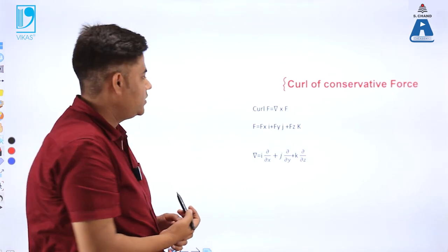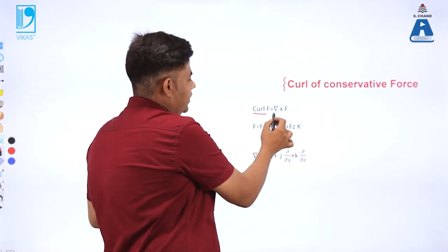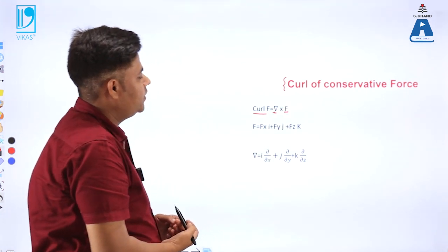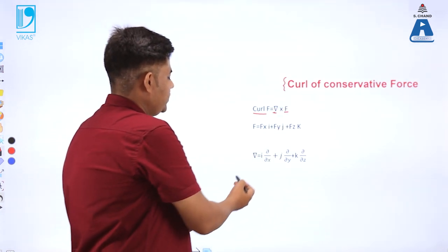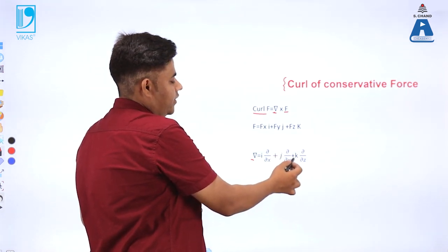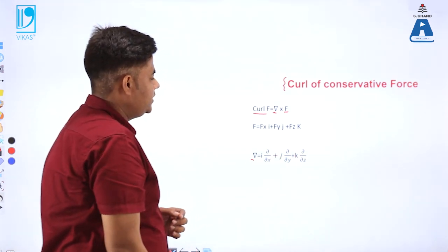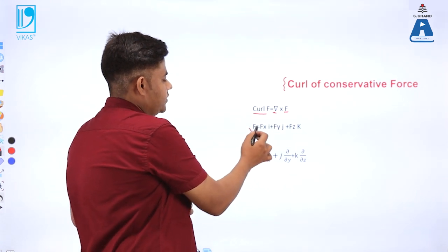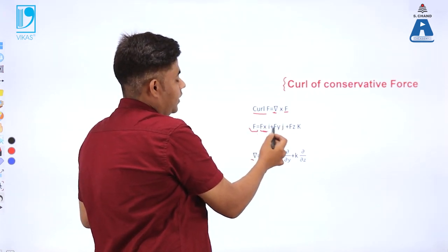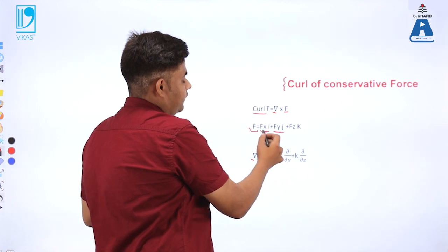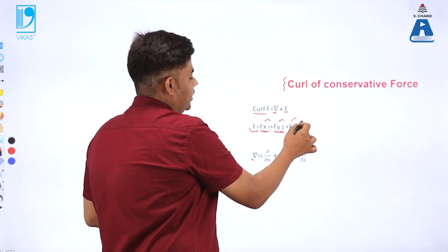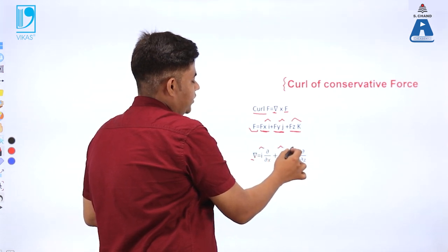The topic is curl of the conservative force. The curl of F is del cross F, where del is the operator: i(∂/∂x) + j(∂/∂y) + k(∂/∂z). The force F, which is a conservative force, has the expression: F = Fx·i + Fy·j + Fz·k, where i, j, k are the unit vectors.